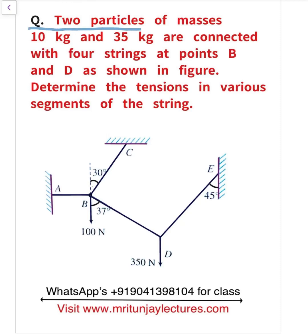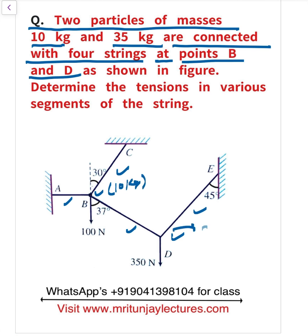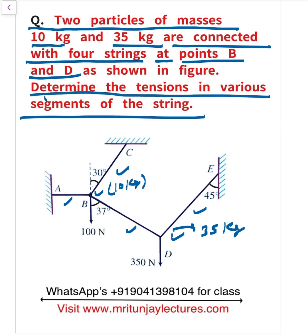Question of the day: two particles of masses 10 kg and 35 kg are connected with four strings at points B and D. The four string tensions are T1, T2, T3, and T4. Determine the tension in the various segments of the string.